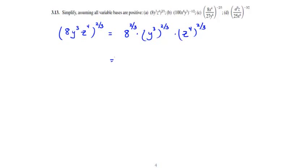We can rewrite each of these terms. First, for the constant term, 8 to the 2/3 power can be rewritten as 8 to the 1/3 power, squared. The second term is found by multiplying the exponents: y to the 3 times 2/3 power. Similarly for z, the third term becomes z to the 4 times 2/3 power.